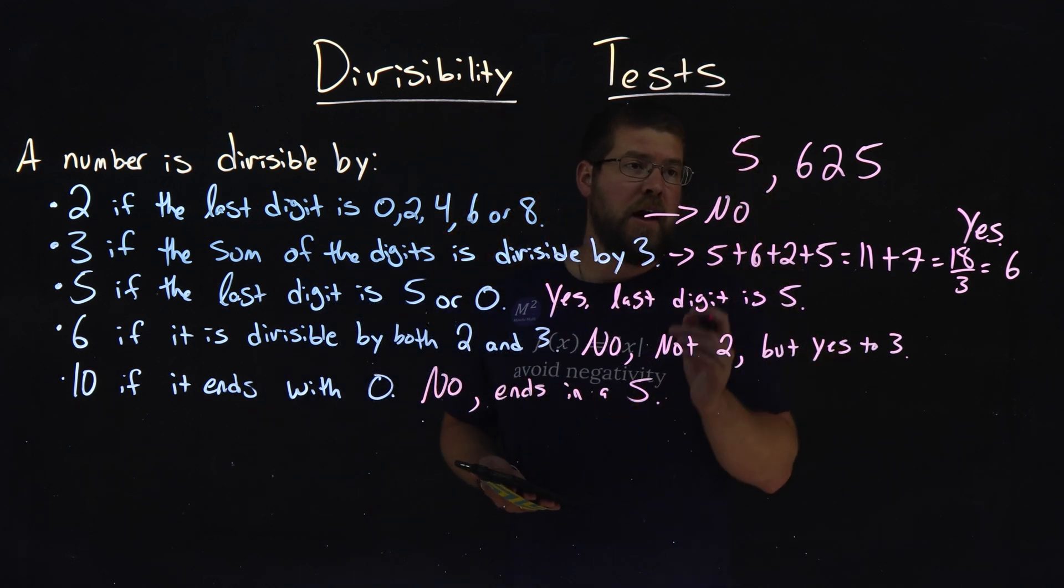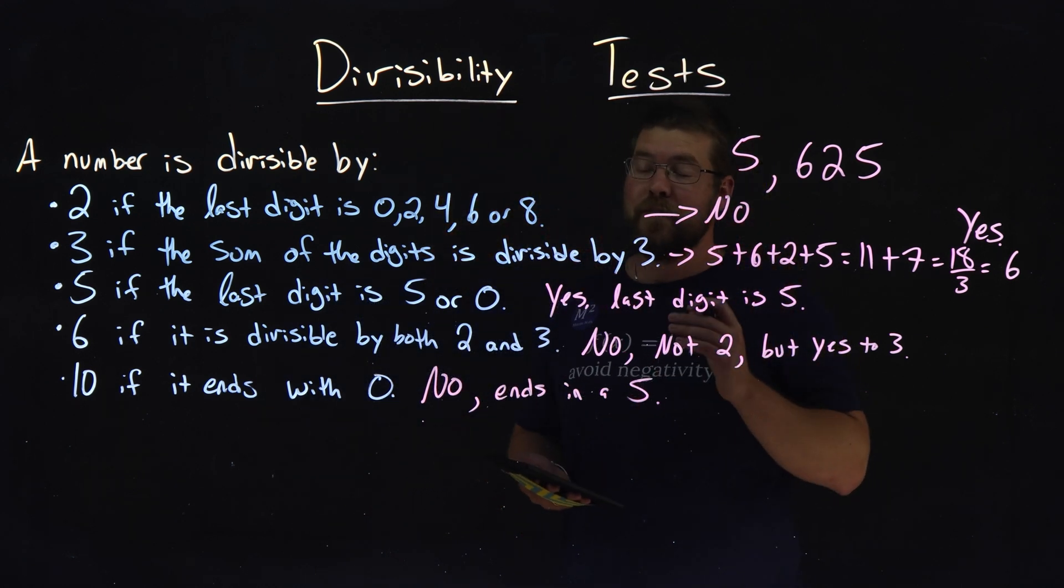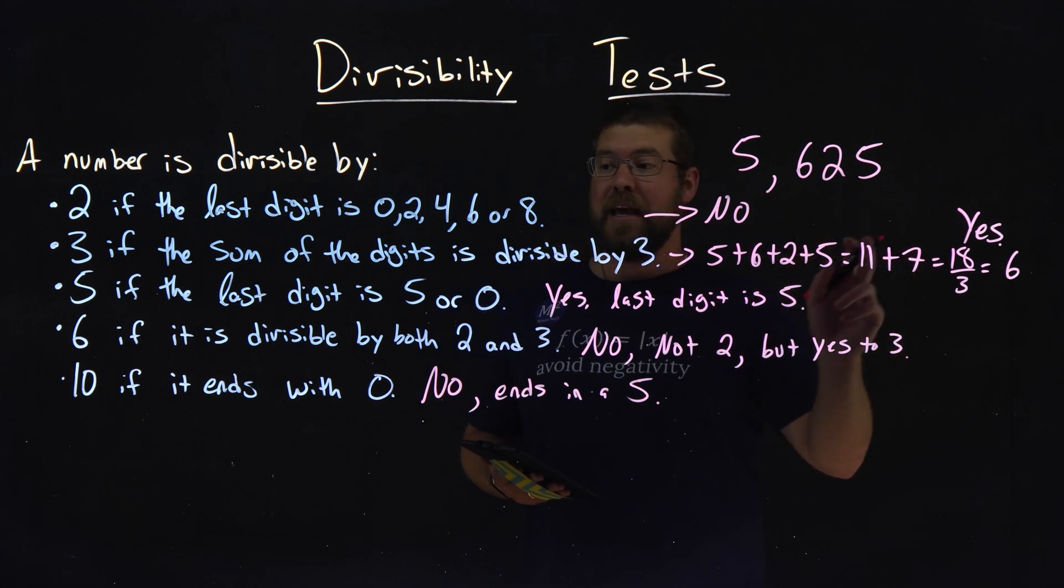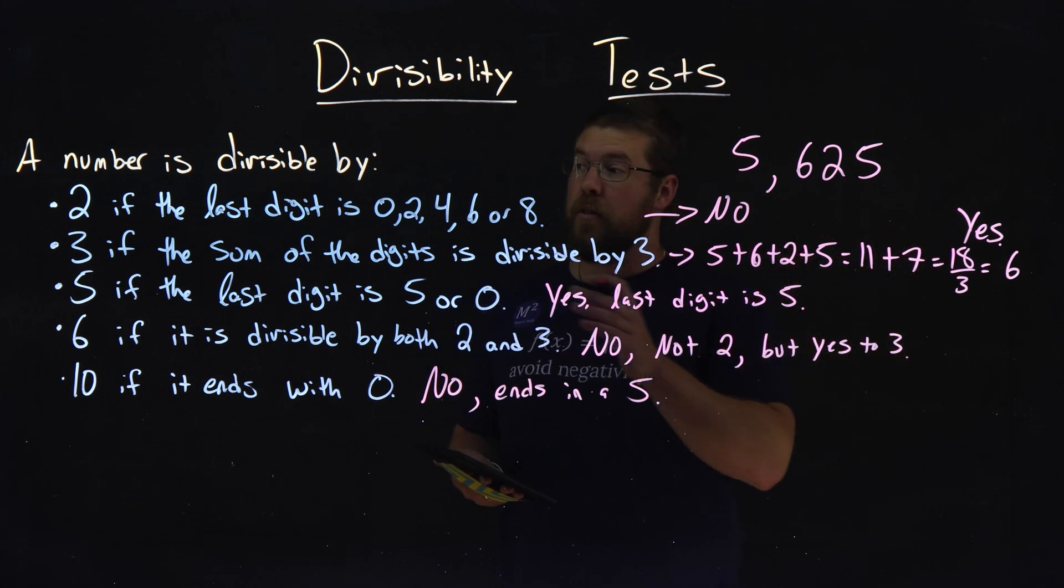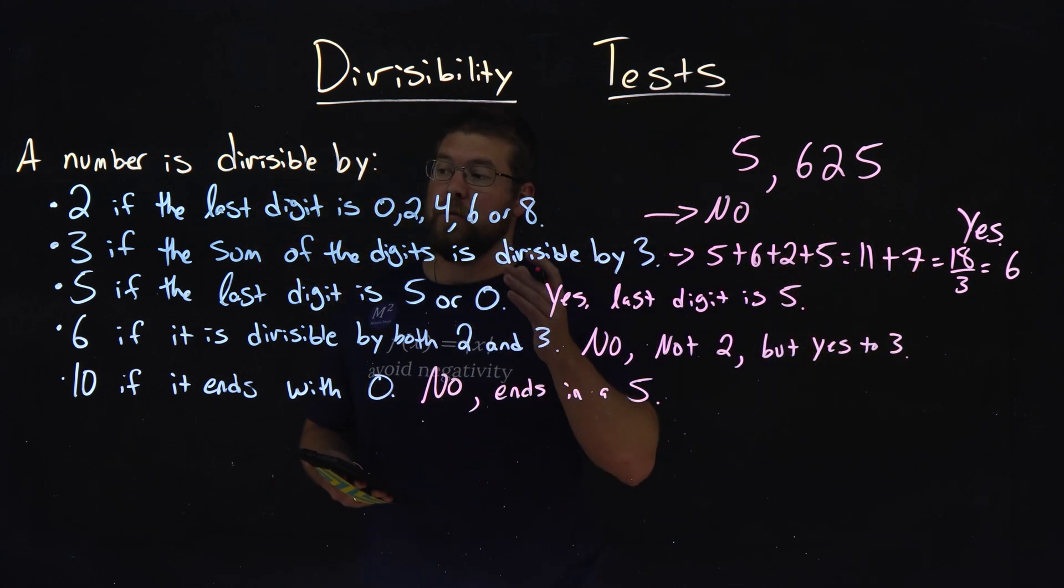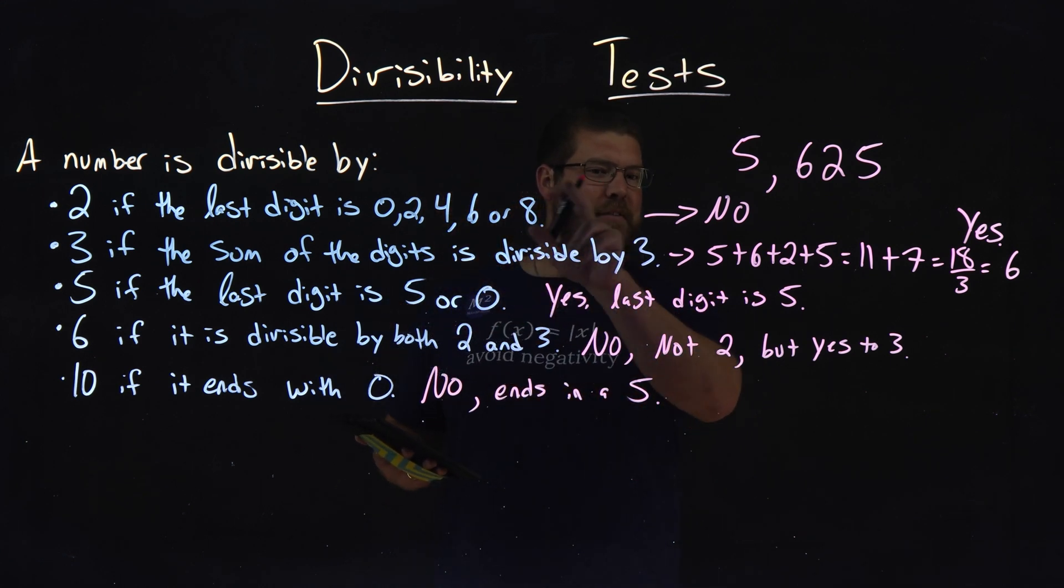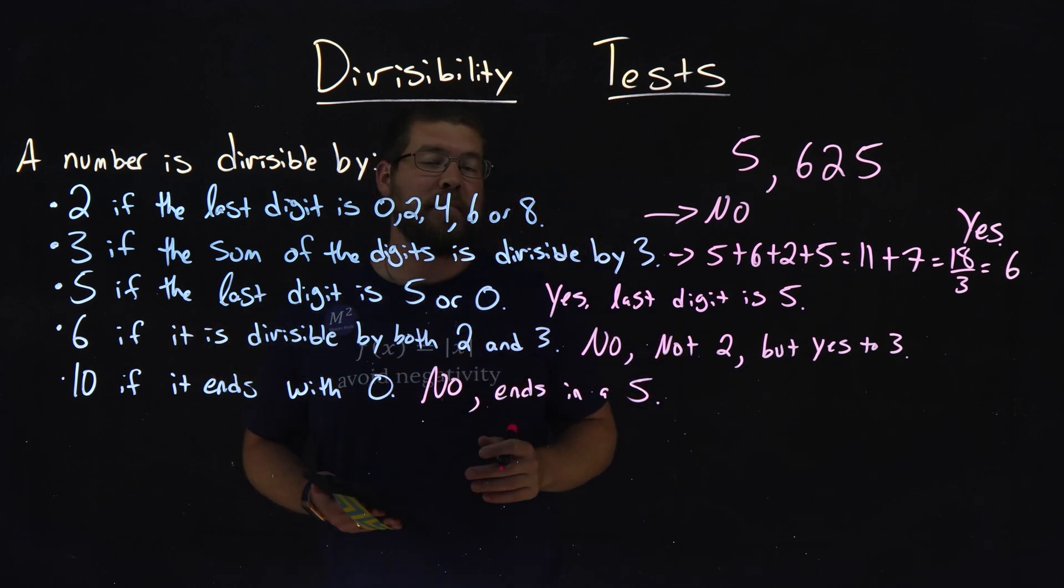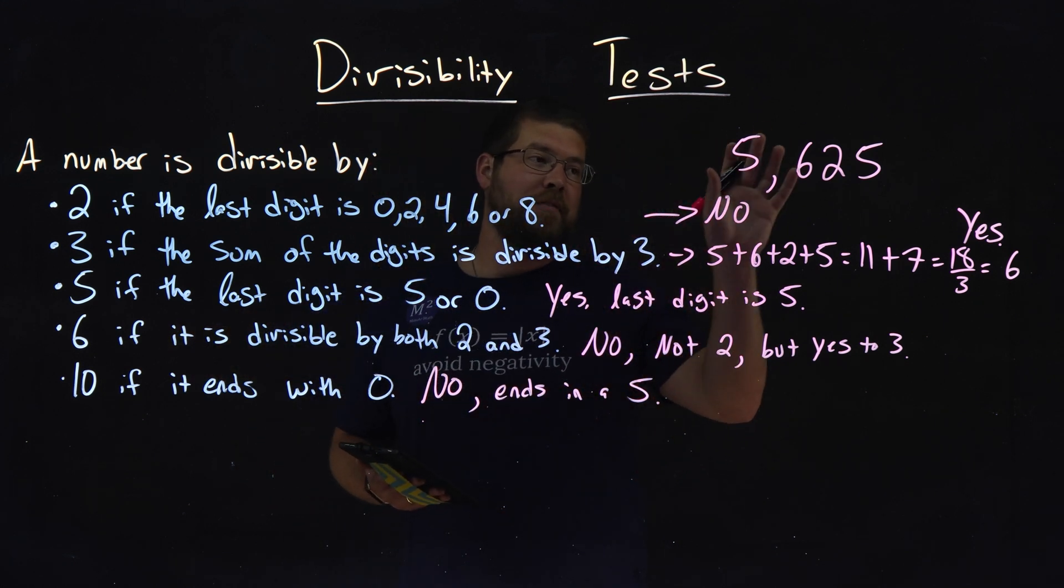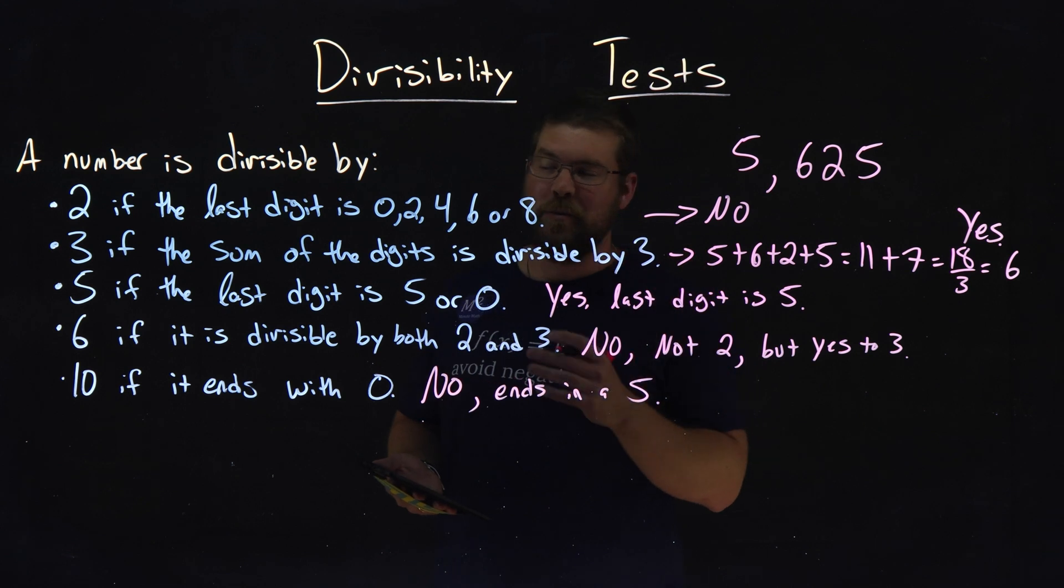And so our number 5,625 is only divisible by 3 and 5. The other digits that we were asked to check, 2, 6, and 10, were not divisible. 5,625 was not divisible by them.